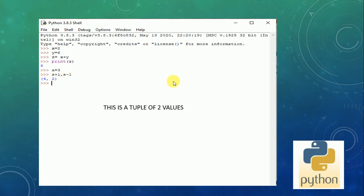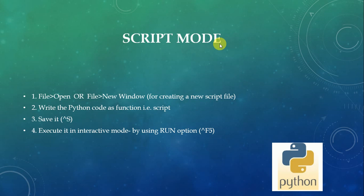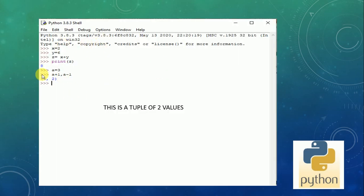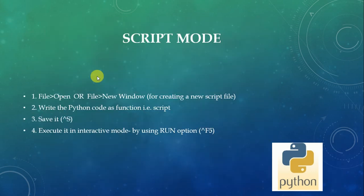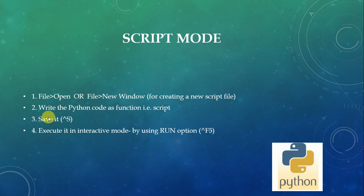Next is script mode. In interactive mode we directly enter values and get answers, which is for simple purposes. For more complex programs, we move to script mode. To open a script, we go to File > New Window. We write the program in that window, save it, then run it by pressing Ctrl+F5, and the answer will be available in the shell.